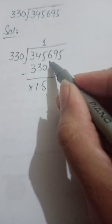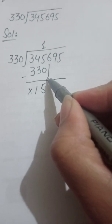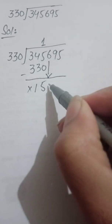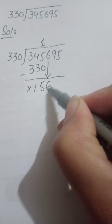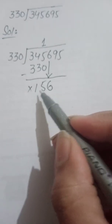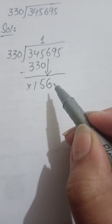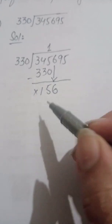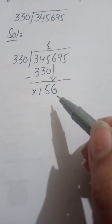Next step is bring down the next digit, which is 6. Now this gives us 156. Now look, students: 156 is a smaller number than 330.